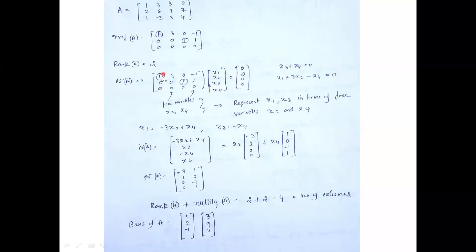The dimension of the column space is two — the first and third columns form the basis. The column space is the span of column one [1,2,-1] and column three [3,9,3]. Rank-nullity: rank (2) plus nullity (2) equals number of columns (4). Verified. This concludes the topics on rank, nullity theorem, independence, basis, and null space.